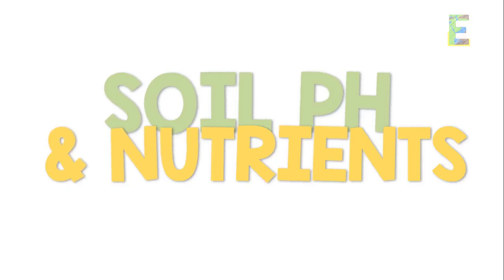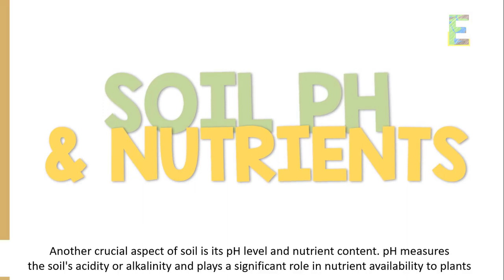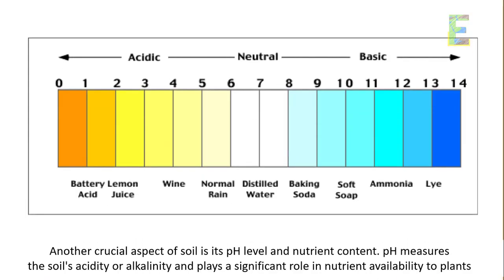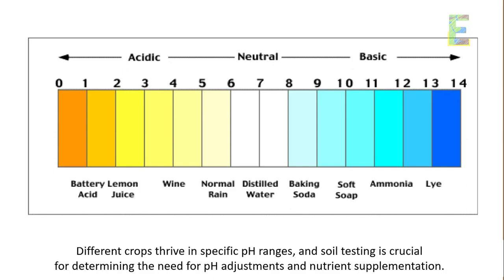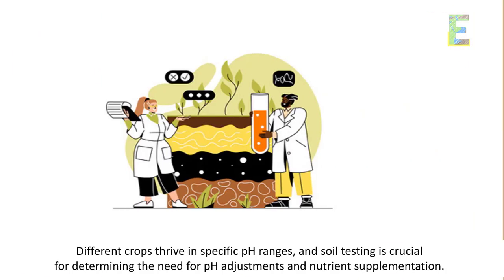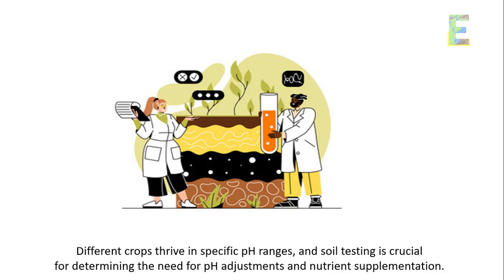Soil pH and Nutrients. Another crucial aspect of soil is its pH level and nutrient content. pH measures the soil's acidity or alkalinity and plays a significant role in nutrient availability to plants. Different crops thrive in specific pH ranges, and soil testing is crucial for determining the need for pH adjustments and nutrient supplementation.